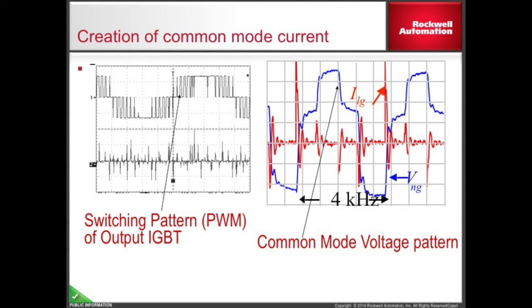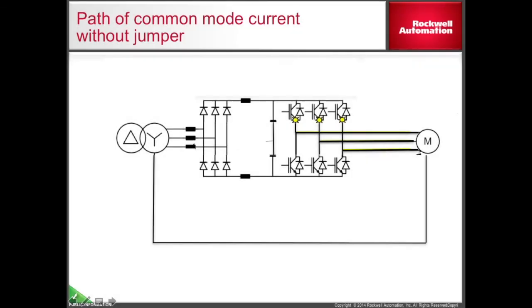The magnitude of the common mode current goes up with motor lead length. Here, the common mode current path is shown without the PEB jumper installed. Without the PEB jumper installed, the current will take an uncontrolled path back to the corresponding IGBT, selecting the least resistant path all the way through the transformer, back up through the line, and to the drive.